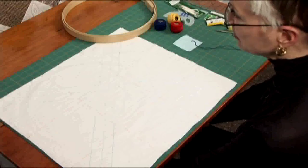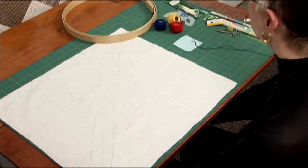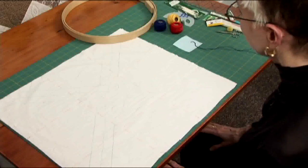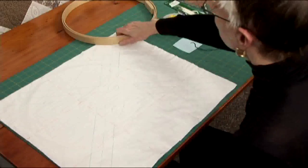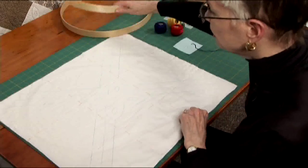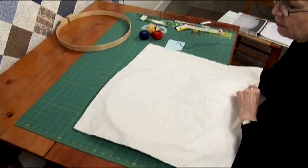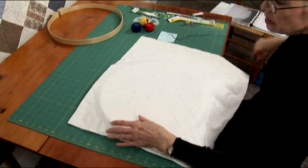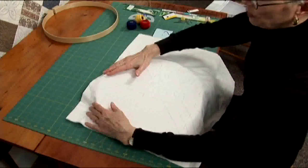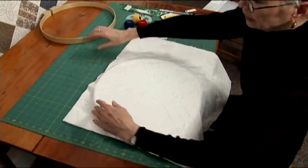This is big stitch lesson number three and today we're going to bury the starting knot. First we put the practice piece in the hoop, positioning the hoop where you want to start quilting.